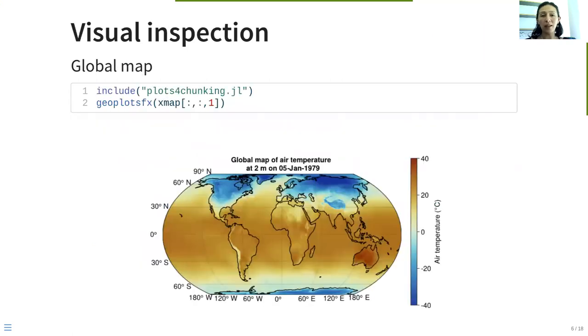As usual, we start with the visual inspection of our input files. Here we are plotting the first date of our dataset, early January 1979. As we expect, we have low temperatures in the boreal winter and high temperatures in the austral summer in the southern hemisphere.